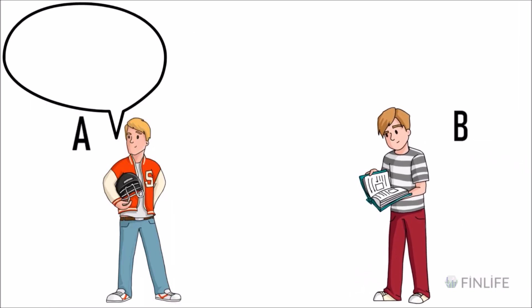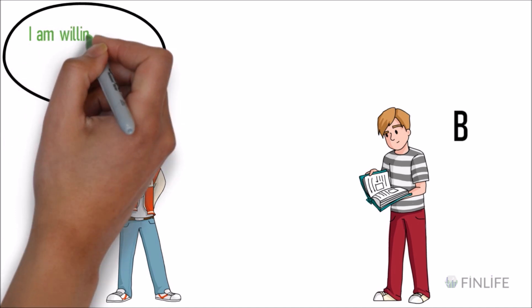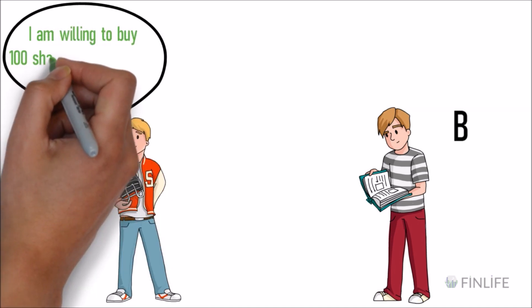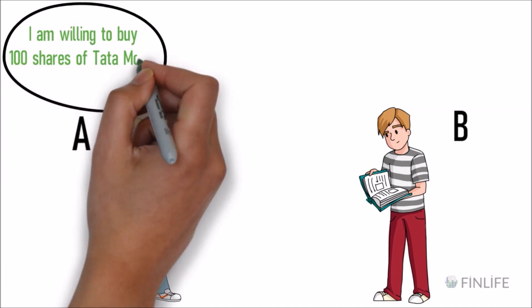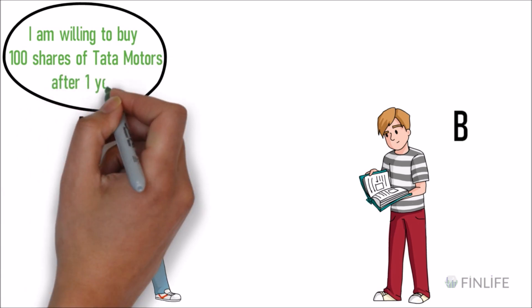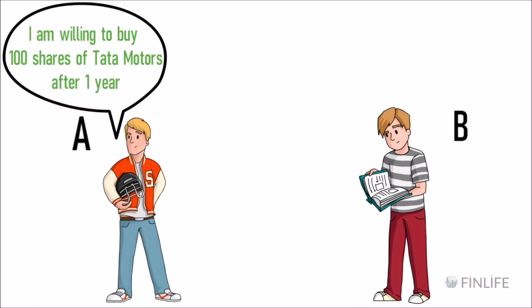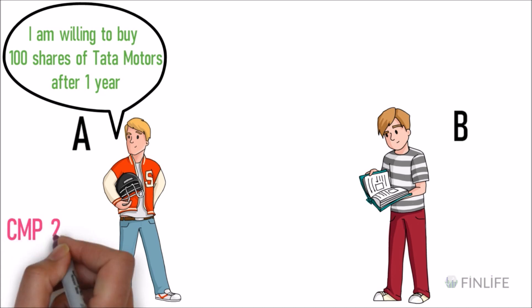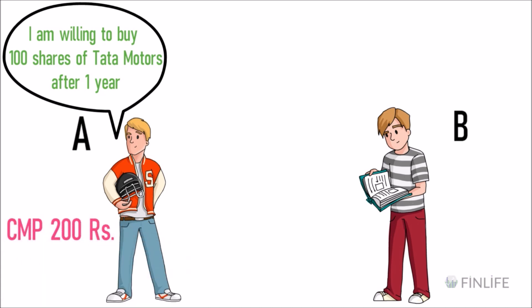In this case, A tells B that he is willing to buy 100 shares of Tata Motors after one year, and the current market price of the stock is 200 rupees. So do you think A is willing to buy from B, and will B sell those 100 shares of Tata Motors for 200 rupees itself after one year?